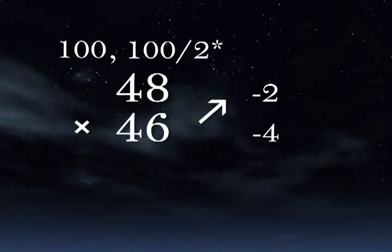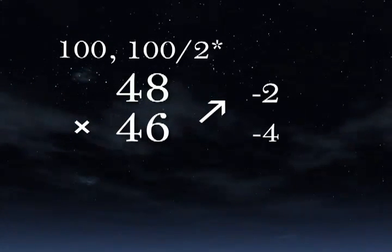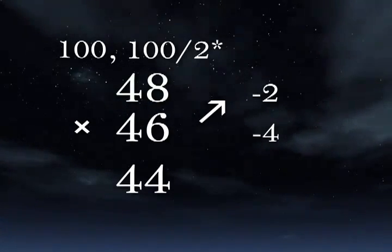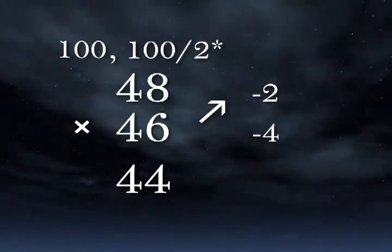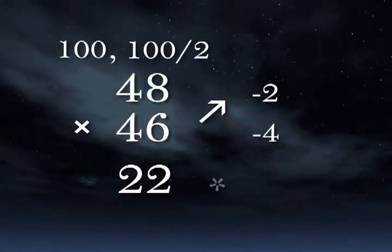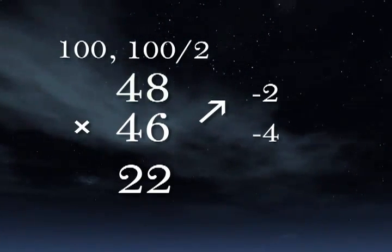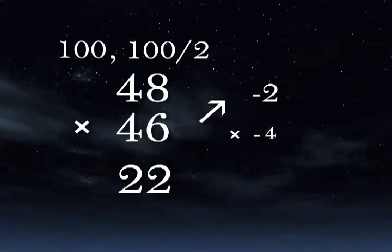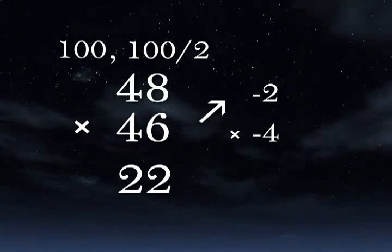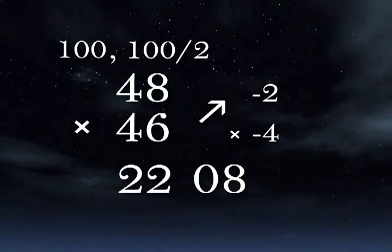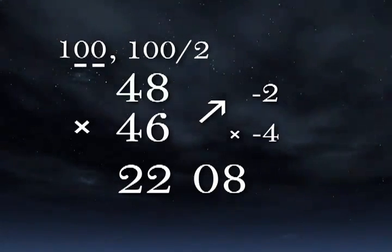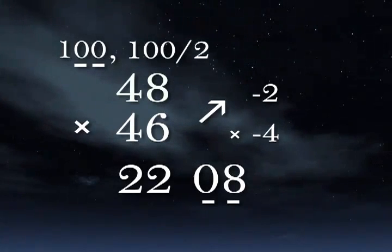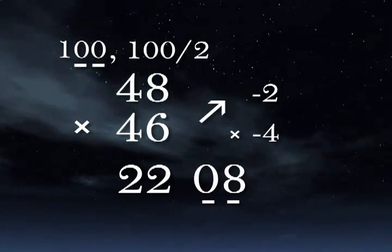Working crosswise, 46 minus 2 is 44. The left side number alone gets divided by 2 at this point, which makes 22 the left side amount. The right side is treated normally. Negative 2 times negative 4 is 8. But we write 08. There are two zeros in the actual base, so there will be two digits on the right side of the answer. The answer is 2208.